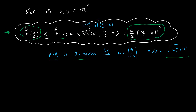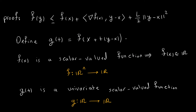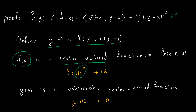So let's see how we can do it. To prove this inequality, I need to define a function g(t), which equals some combination of the arguments of f at x. This function f(x) is a scalar-valued function — it takes a point in R^n and outputs a scalar. However, g(t) is a univariate function. We have t multiplied by y minus x, and then we add x.